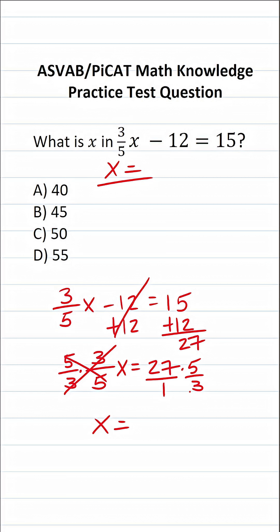More specifically, 3 goes into 3 one time, and 3 goes into 27 nine times. This becomes 9 over 1—9 divided by 1 is 9—times 5 over 1, which is 5.